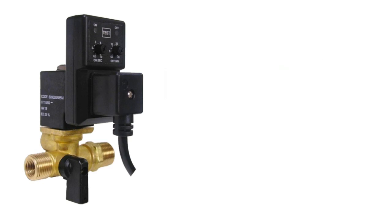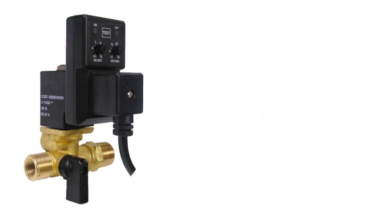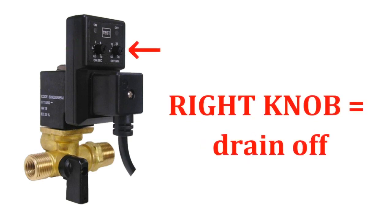To properly set your EDV, use the two adjustment knobs located on the face of the unit. The left knob controls how many seconds the drain remains on or open, while the right knob controls how many minutes the drain is shut off.